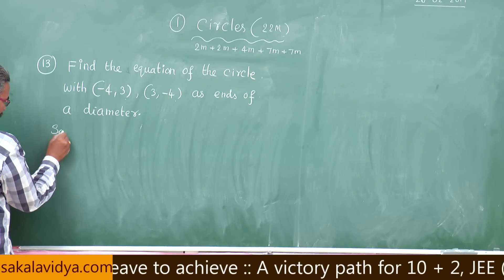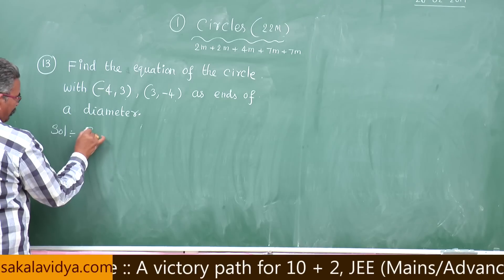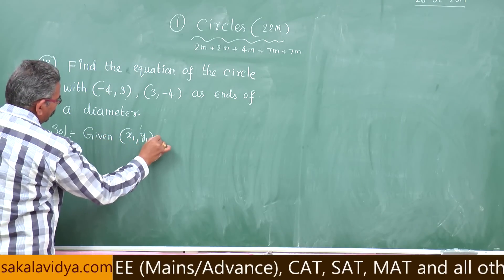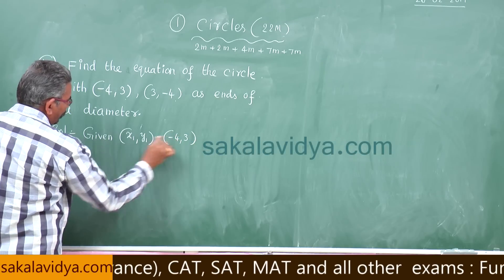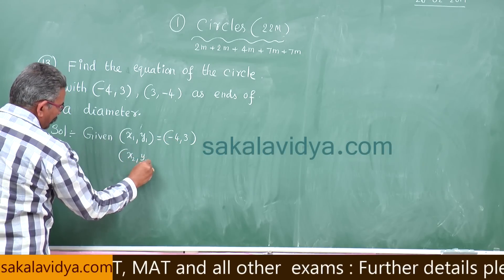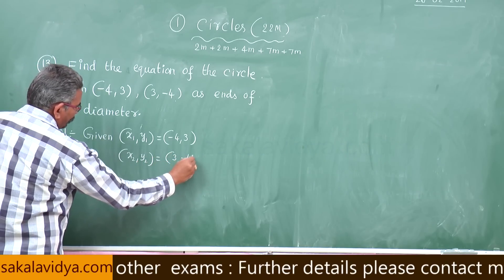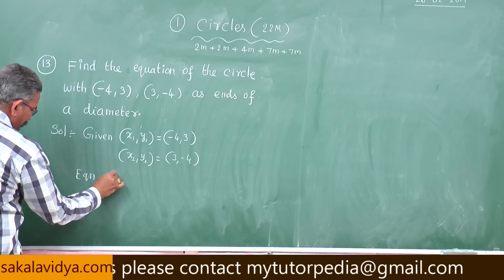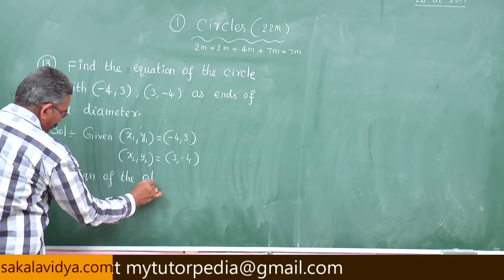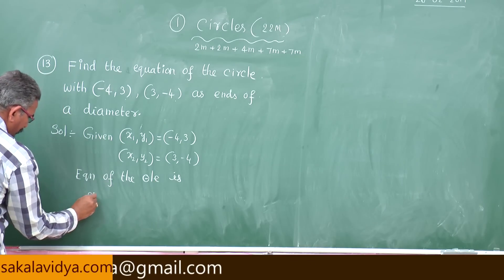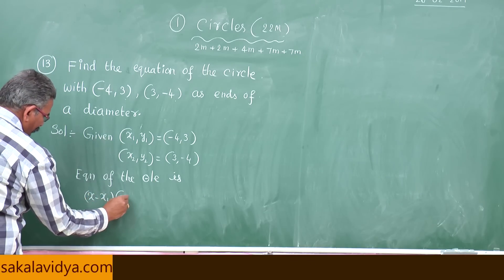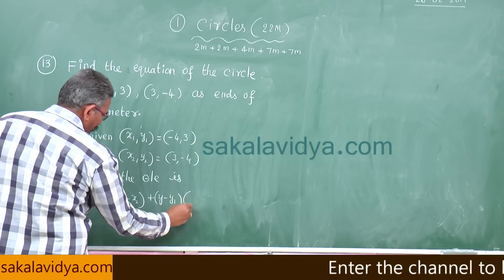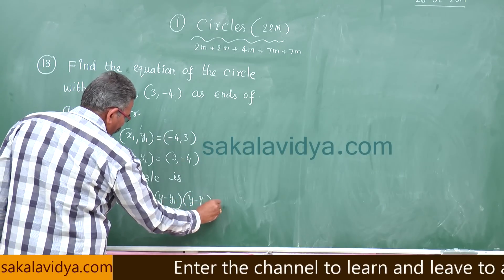Here the ends of the diameter are: x1, y1 = (-4, 3) and x2, y2 = (3, -4). Applying the formula, the equation of the circle is (x - x1)(x - x2) + (y - y1)(y - y2) = 0, which becomes (x + 4)(x - 3) + (y - 3)(y + 4) = 0.